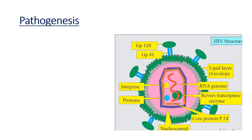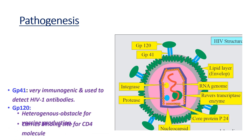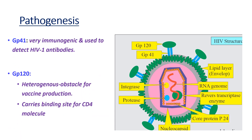Regarding pathogenesis, HIV is an enveloped virus with different components. GP41 is very immunogenic and able to detect HIV antibodies. GP120 is heterogeneous, is an obstacle for vaccine production, and carries the binding site for CD4 molecules.